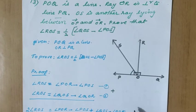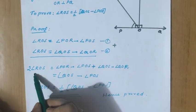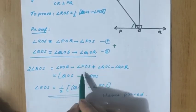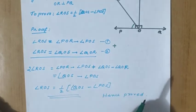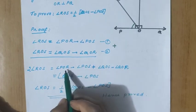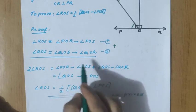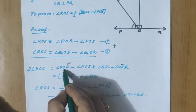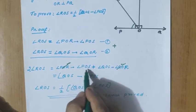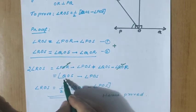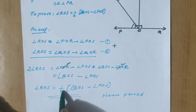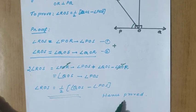Just add these two equations. The left-hand side gives 2 times angle ROS. On the right side: angle POR minus angle POS plus angle QOS minus angle QOR. Since OR is perpendicular to PQ, angle POR and angle QOR are both 90 degrees. One is plus and the other minus, so they cancel. What remains is angle QOS minus angle POS. So 2 times angle ROS equals angle QOS minus angle POS, giving angle ROS equals half into angle QOS minus angle POS. Hence proved.